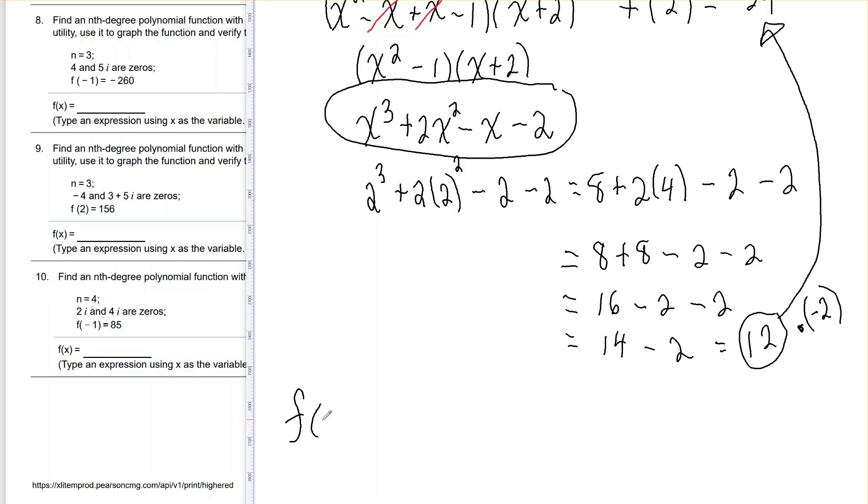So I need to take every term here and multiply it by a negative 2 and I'll have my function. So my function f of x would be negative 2 times everything I got. So that's x cubed plus 2x squared minus x minus 2. And that would give me negative 2x cubed minus 4x squared plus 2x plus 4. And that would be my final function.